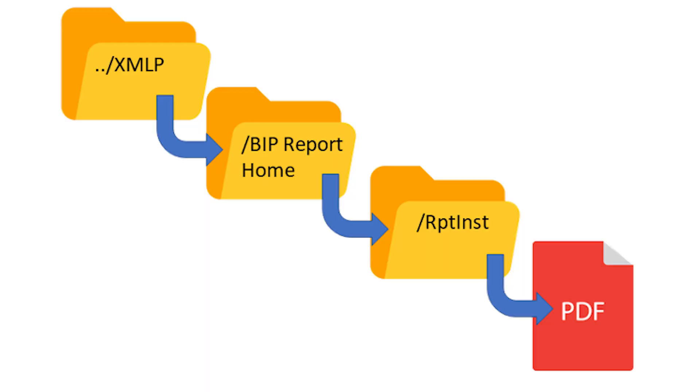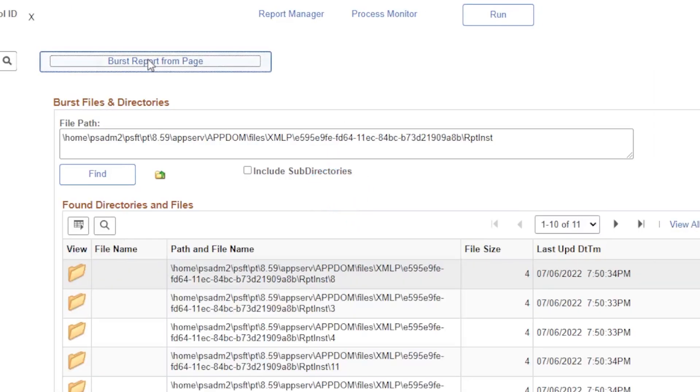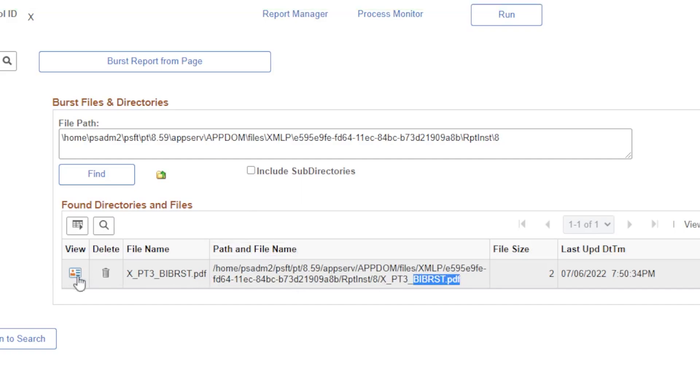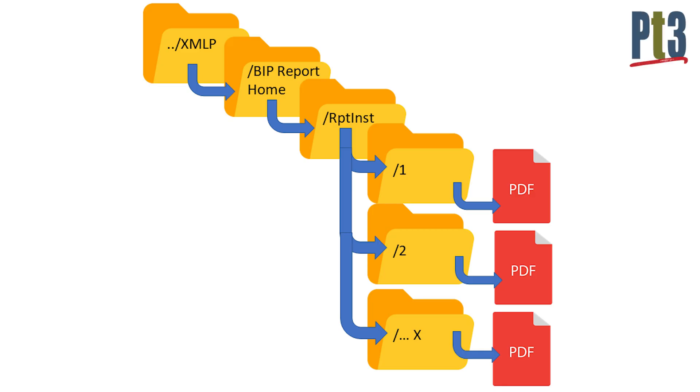Bursting does have an architectural implication you want to get your admins involved in. A non-bursted BI Publisher report has the BI Publisher directory, the report instance directory, and underneath that is the report. A bursting report creates a new subdirectory in that report instance directory for every bursted value. So if you have a report bursted into 20 different small reports, you will have 20 subdirectories named sequentially 1, 2, 3, 4, and so on. This doesn't scale — think of a large paycheck run where you're bursting and you have tens of thousands of subdirectories. It gets unwieldy, it weighs down your file system, and it's going to turn ugly after not too long.